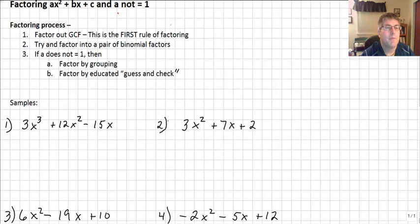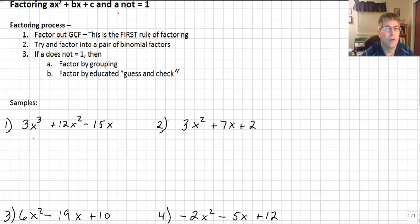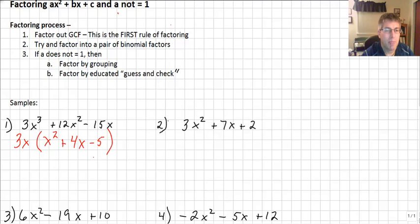In sample number 1, we have 3x³ + 12x² − 15x. The initial term on the far left, 3x³, is our highest degree. You may see that we have a common factor in every single one of those terms. So let's begin by factoring out 3x. If we factor out 3x, we're left with x² + 4x − 5, which is still factorable.